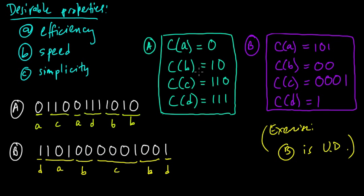Code A is also uniquely decodable, and in fact code A is what's called a prefix code — also called prefix-free or instantaneous. In the next video we'll define what that means. The property is just what we observed while decoding: as soon as we finished reading a given code word, we were able to immediately — instantaneously — determine what source symbol had generated it. That's called the prefix property, for reasons that will become clear in the definition.